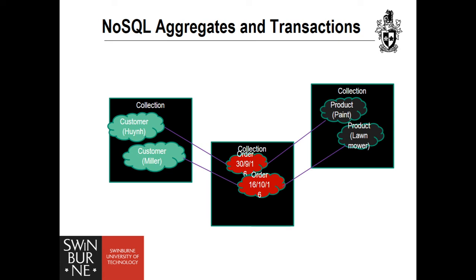If you decide to separate the entities customer, order, and product into different collections, NoSQL databases let you model relationships between these entities. However, you have to be aware there is no transaction support for entities not stored in the same collection — there is no way to ensure order and product are updated in the same transaction. In a distributed cluster model, you are not guaranteed that collections are stored on the same server. In this model there is no duplication — you can reference the same product for several orders, as in the relational model.